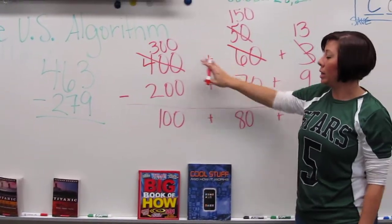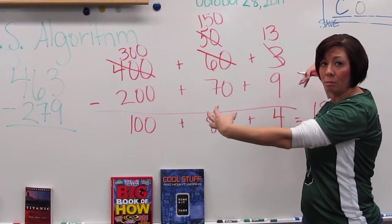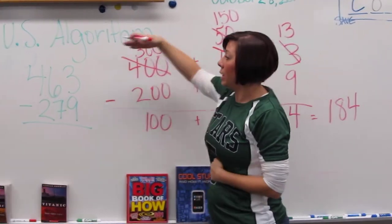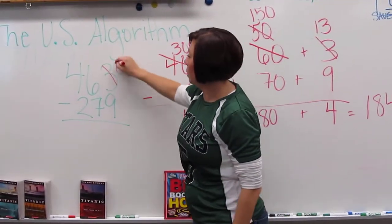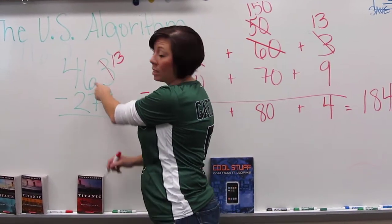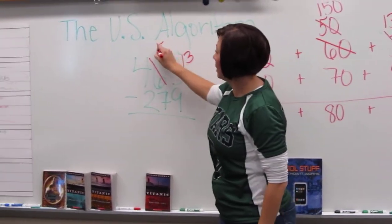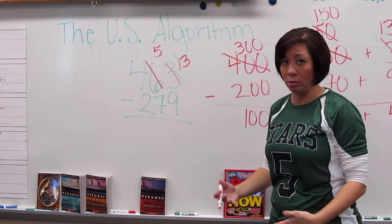And like I said before this is kind of the stretched out version. What we're working towards is getting them to the point where they would automatically be able to go 13. This represents, this is a 6 but it's actually representing 60 so they would change it to 5 which actually represents 50.